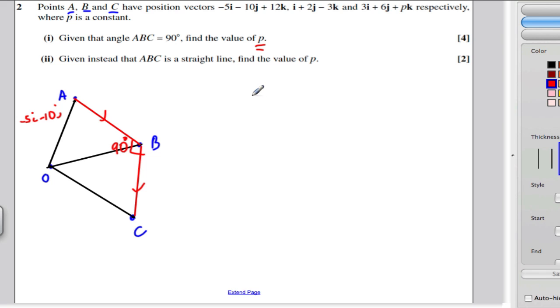I'll write that in: -5i - 10j. We've got a vector from O to B given by this here and we've got a vector from O to C given by that here. It tells you that the angle A to B to C is 90 degrees. That means that if I go from A to B and then from B to C, the angle at B would be 90 degrees.